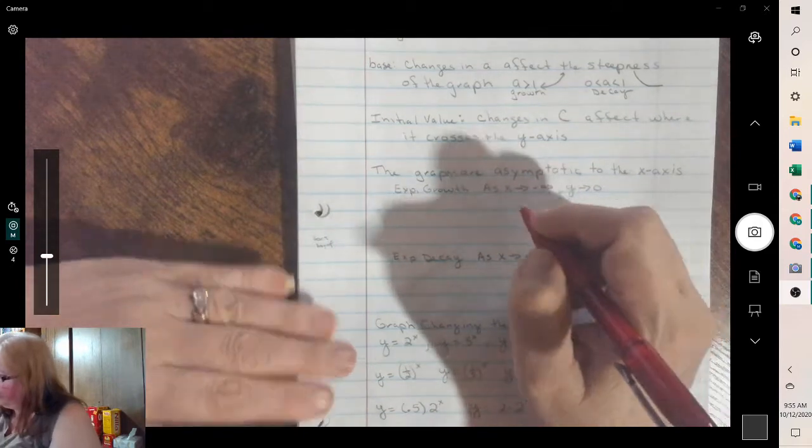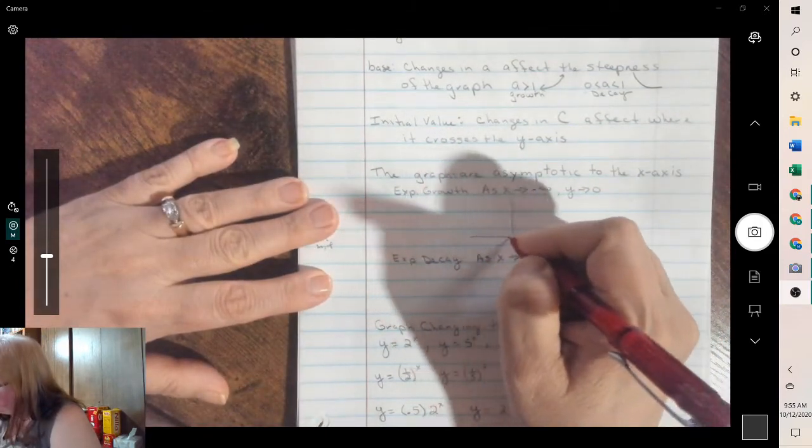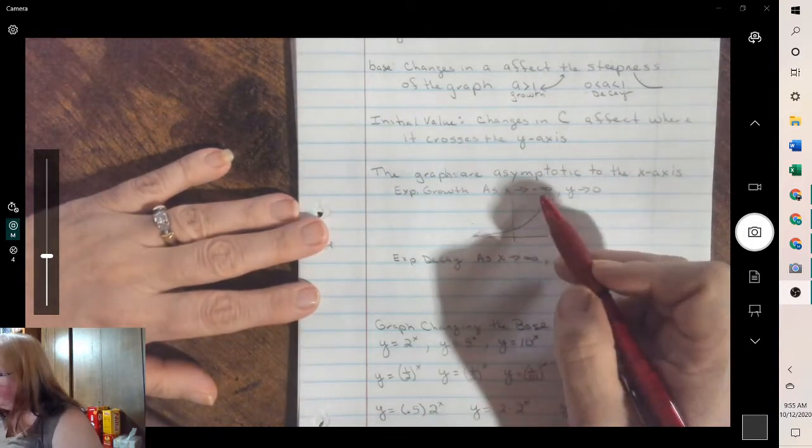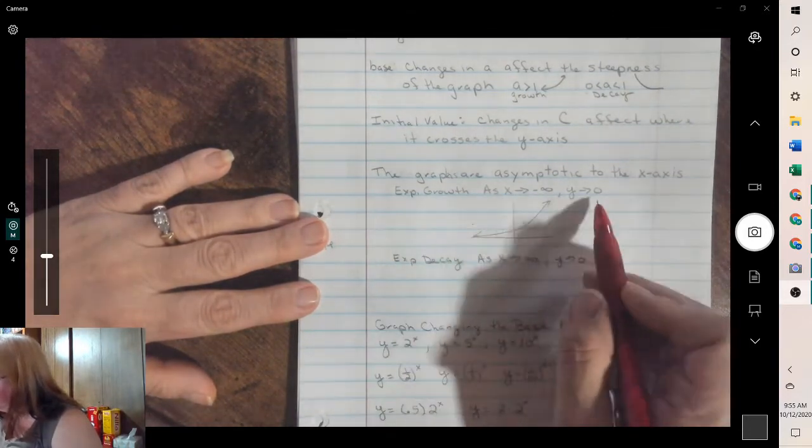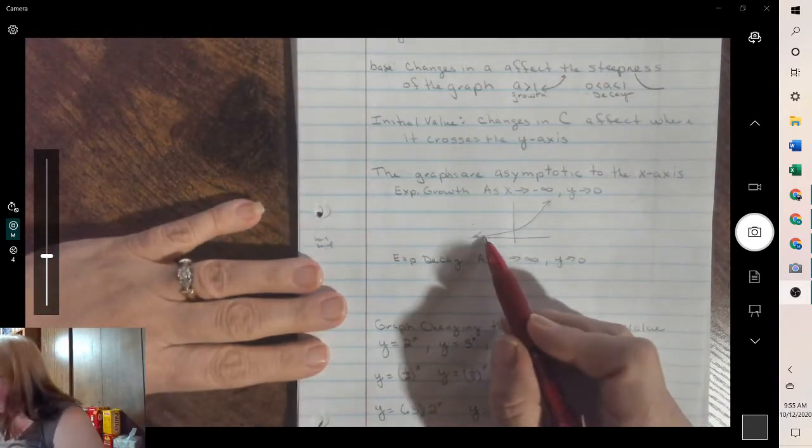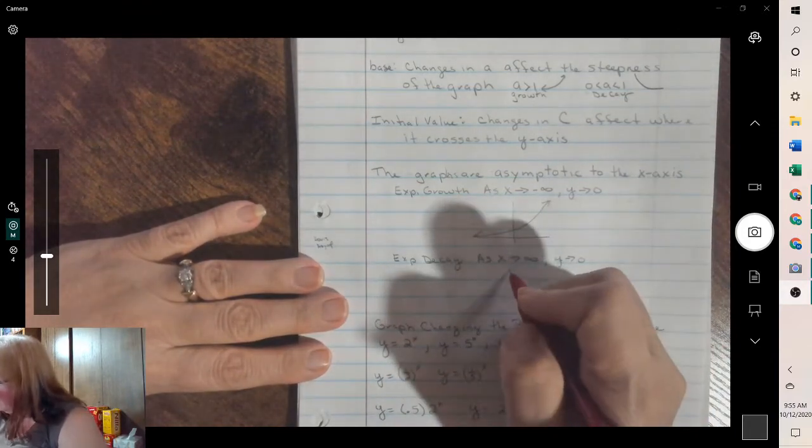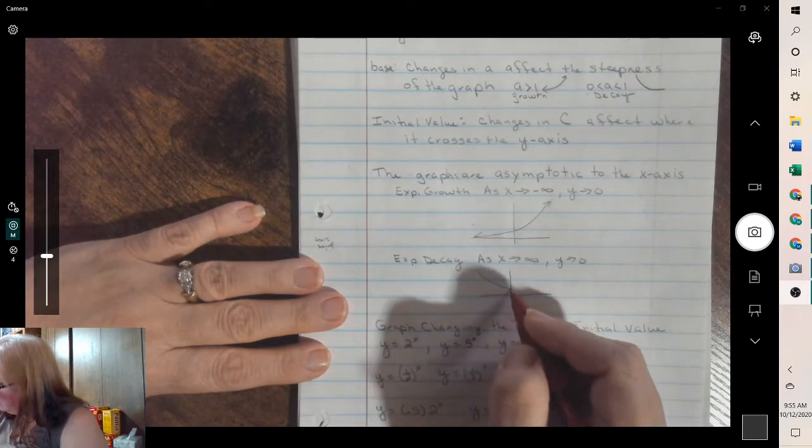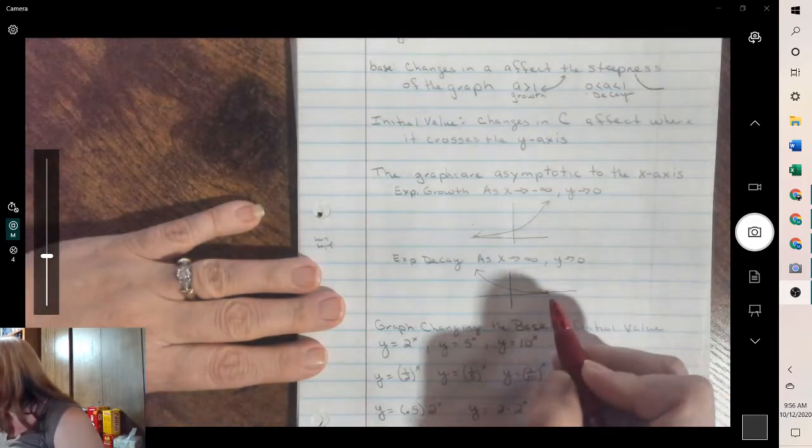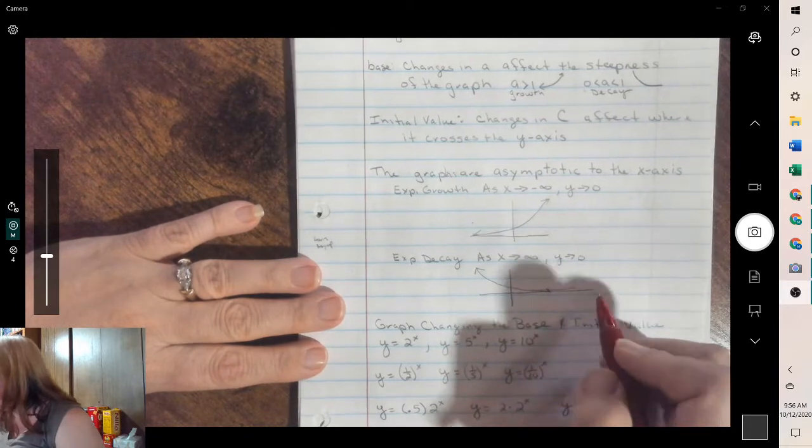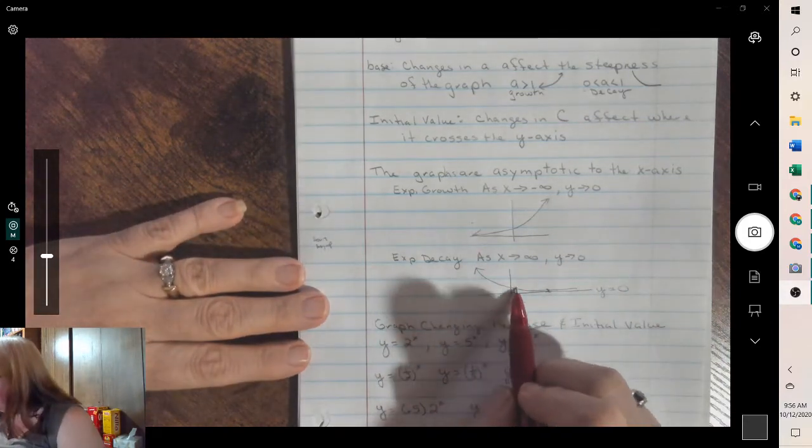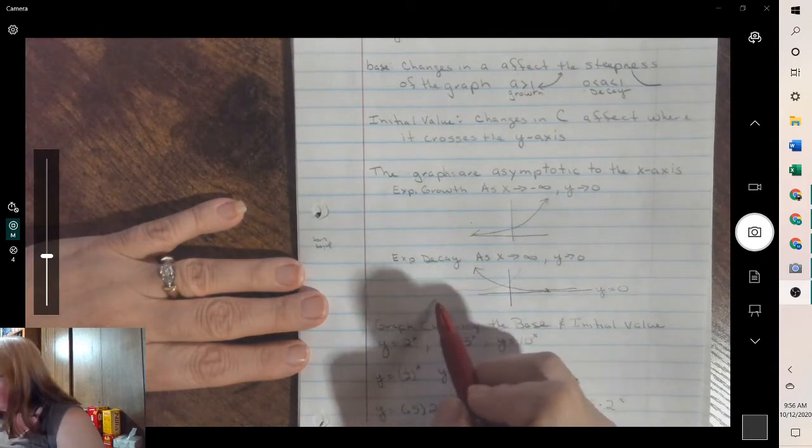Exponential growth: as x is getting negative, going this way, y is getting close to 0. It will never touch 0, but it will get very close to it. Decay quickly goes the other way. It decreases, but it still gets close to the axis. So as x is getting increasingly large, this is getting closer and closer to y equals 0. Both graphs are approaching the same line.